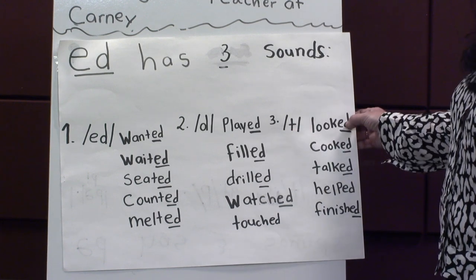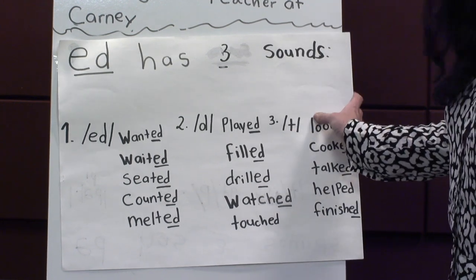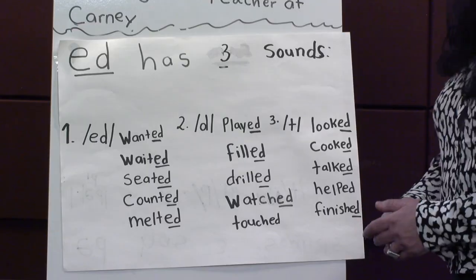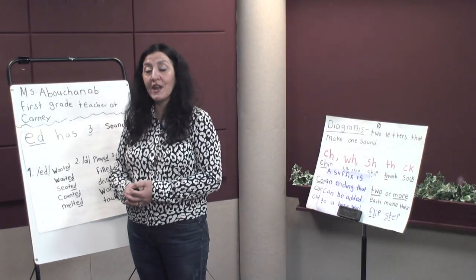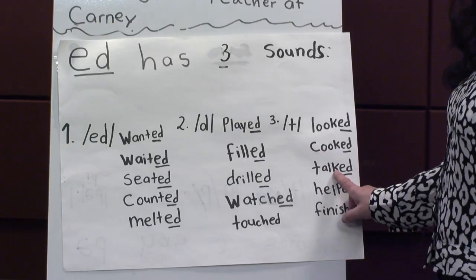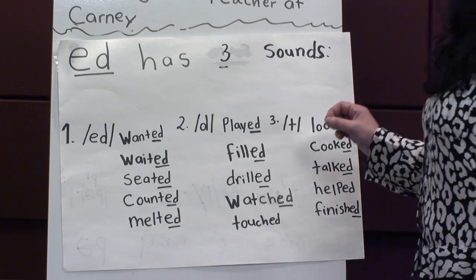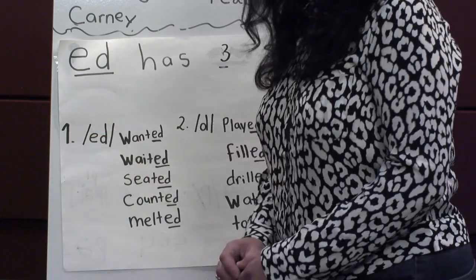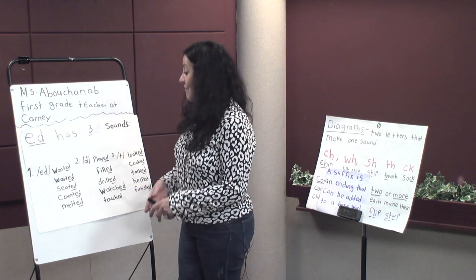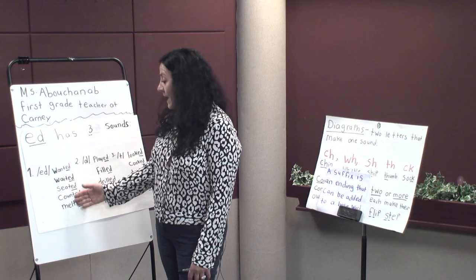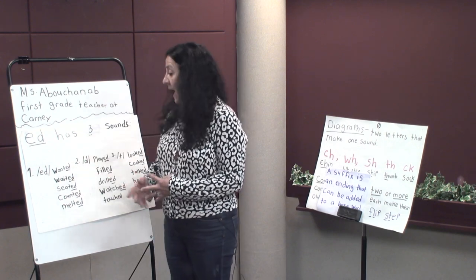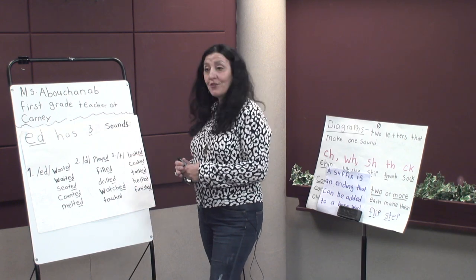The last sound for -ed at the end of a word is 't,' like the words looked, cooked, tucked, helped, finished. You will see a lot of children in first grade — especially English language learners — when they see -ed at the end of a word they will read it like this: they'll say 'talk-ed' or 'walk-ed' because they don't realize that -ed has more than one sound. I'll challenge you to play a game with your child at home: write a base word, add -ed at the end, and try to figure out if the word with -ed has the 'ed' sound, the 'd' sound, or the 't' sound.